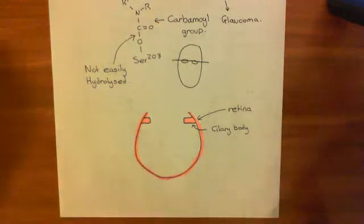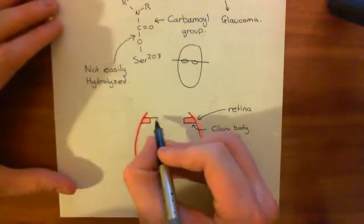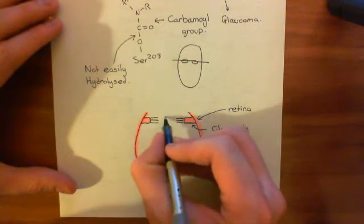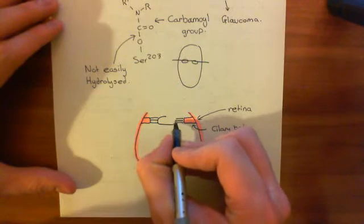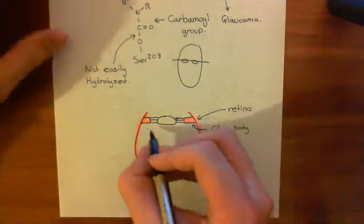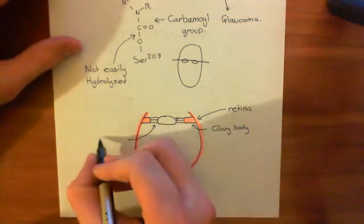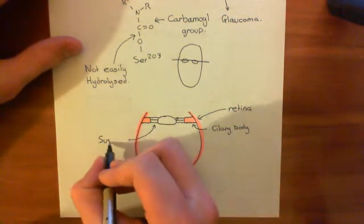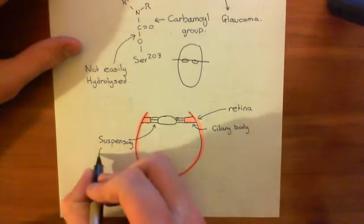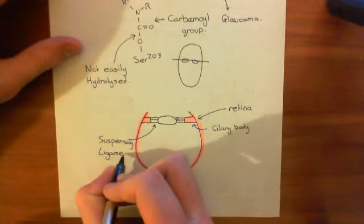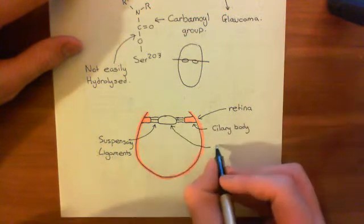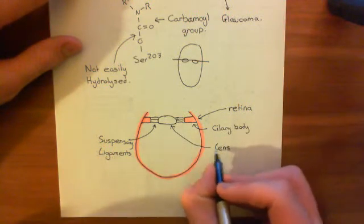Suspended from the ciliary body, you have a number of suspensory ligaments which are holding onto the lens, which sits in the middle. These which are clinging onto the lens are the suspensory ligaments. What they're holding in the middle is the lens, and the lens is responsible for focusing the light.